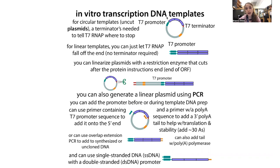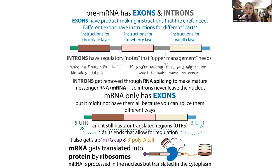You can also generate a linear template using PCR. If you had a sequence in a plasmid, even without a T7 promoter, you can add it on in your primer. With PCR you make DNA copies of the sequence between two primers — two short oligo DNA sequences that bookend the region you want copied. You can use the primer to add the T7 promoter on, or use commercially available plasmids that already have the T7 promoter in front of a gene, sometimes with tags.